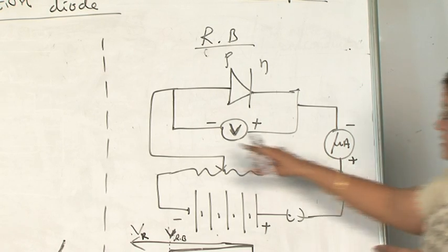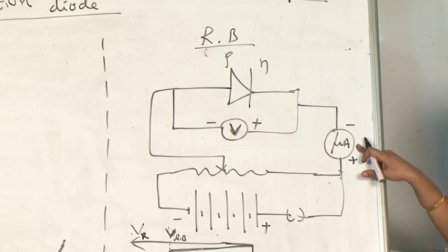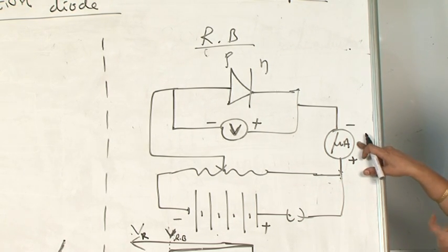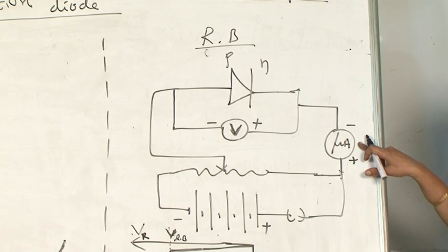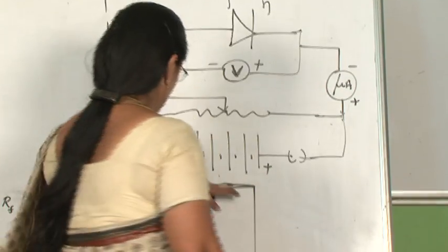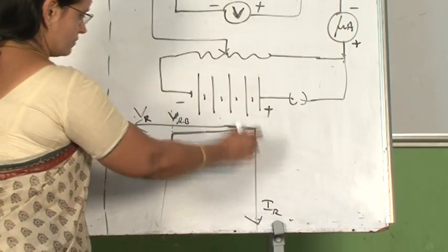If you see here, milliammeter is replaced by the microammeter because the current is due to only leakage of minority charge carriers. Therefore, the microammeter only can register such small currents.